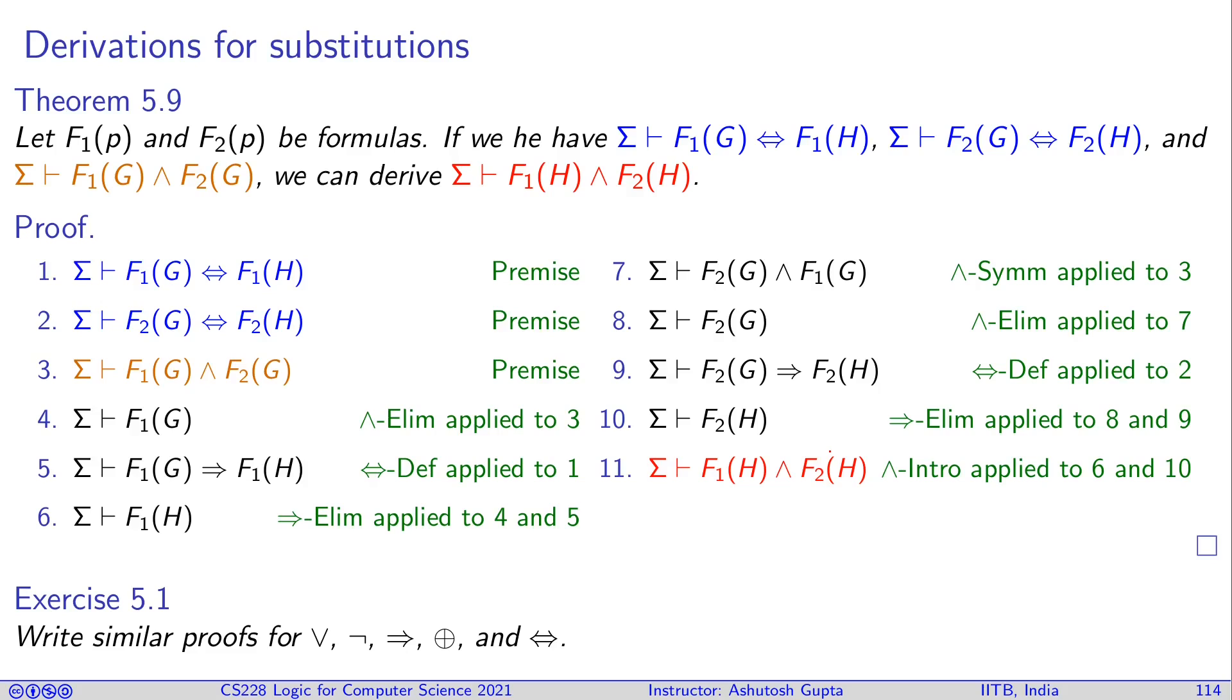So you see that if I have something proven and then you want to replace from G to H in conjunction then I can do that, as long as I have equivalence established somewhere.